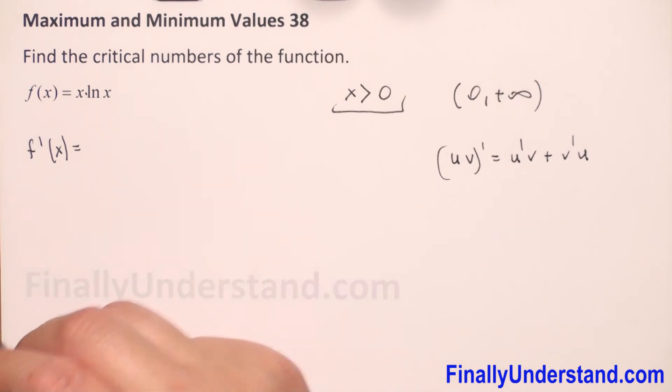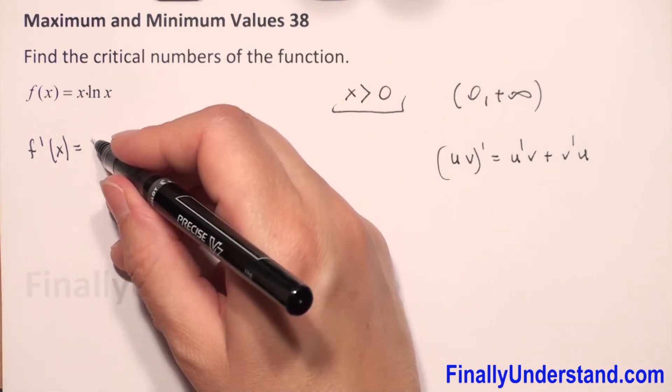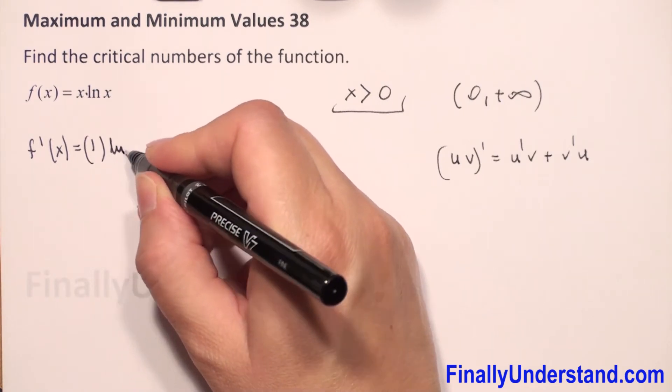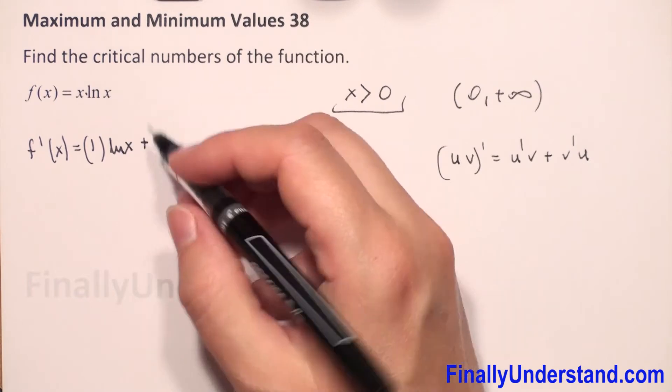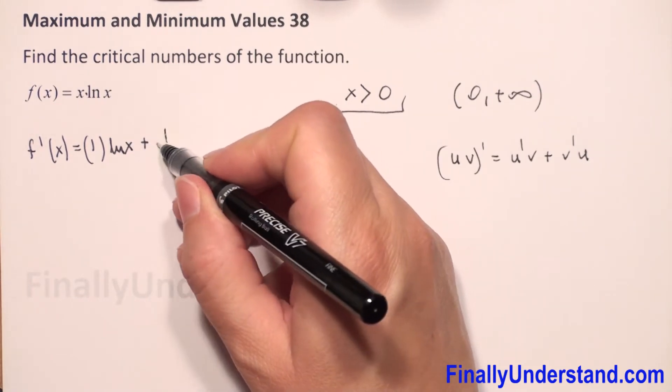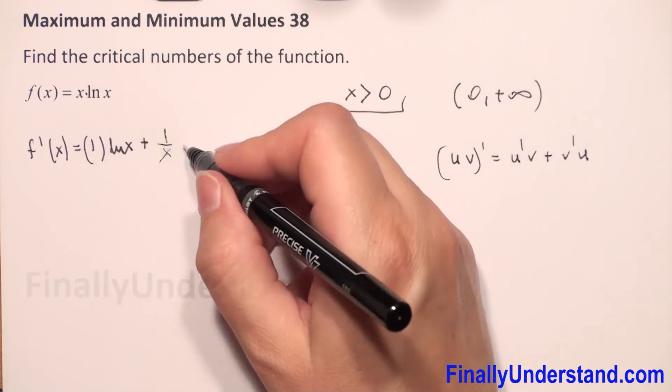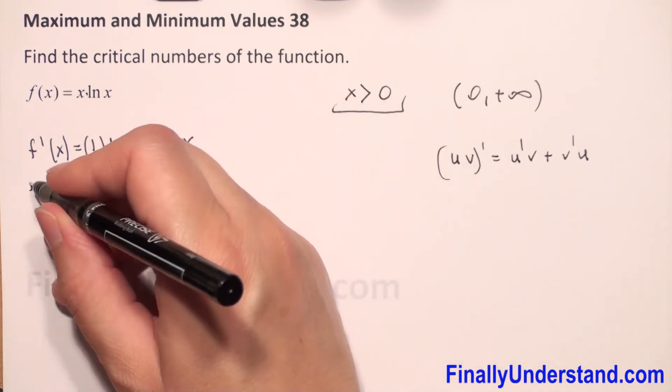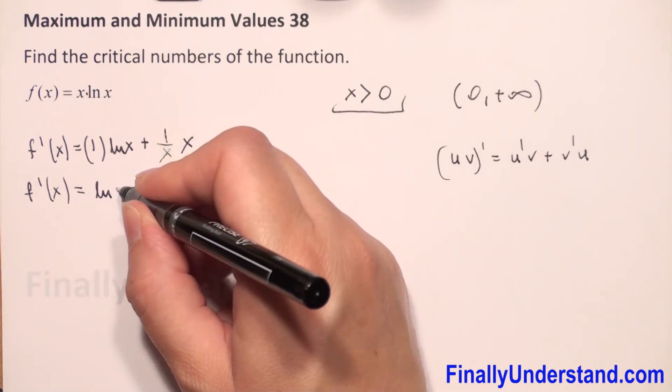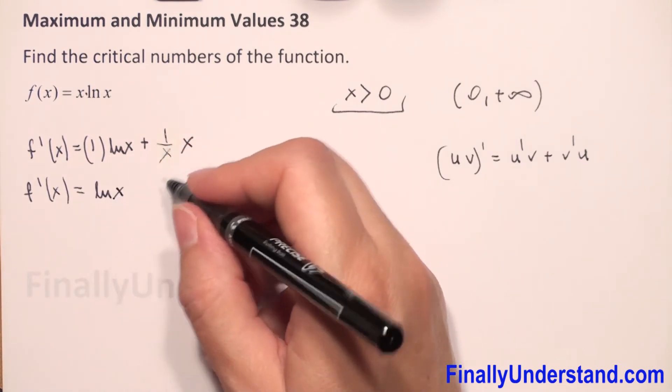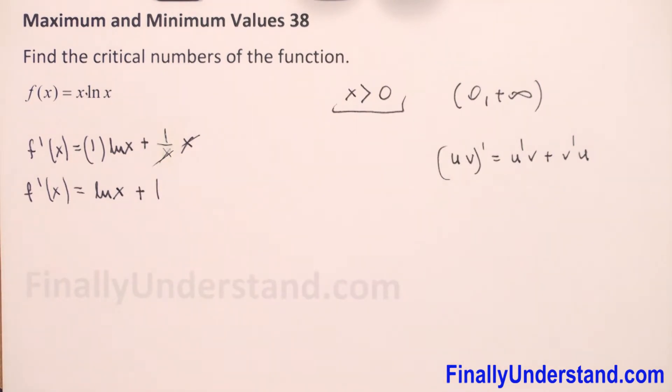We have derivative of x is 1 times natural log of x, plus derivative of natural log of x is 1 over x times x. So we have first derivative is equal to natural log of x. x and x we can reduce, so it will be plus 1.